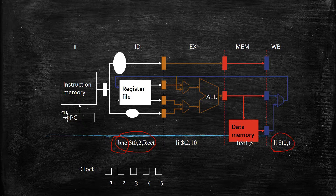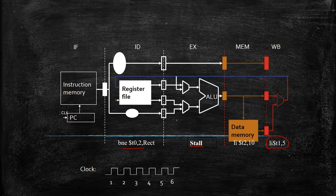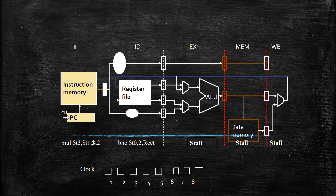When the pipeline finds a branching statement, it stops other instructions from entering higher stages. In the sixth clock cycle, the second load instruction is processed and value 5 is stored in register T1. Because of the branch statement, a stall is introduced in the execution stage. In the seventh clock cycle, the third load statement is processed, value 10 is stored in register T0, and the second stall is introduced. In the eighth clock cycle, a third stall is introduced, and by that time the result of branching is decided, allowing the next instruction to enter the IF stage.